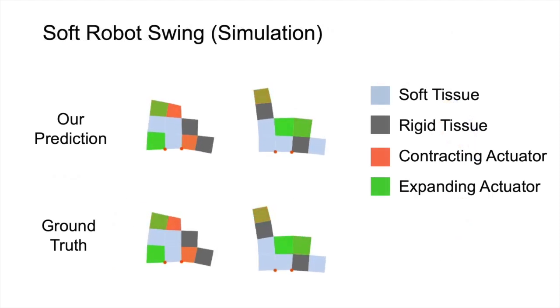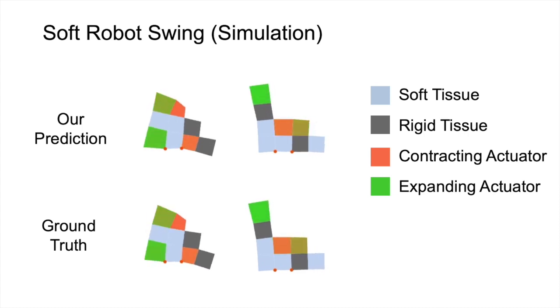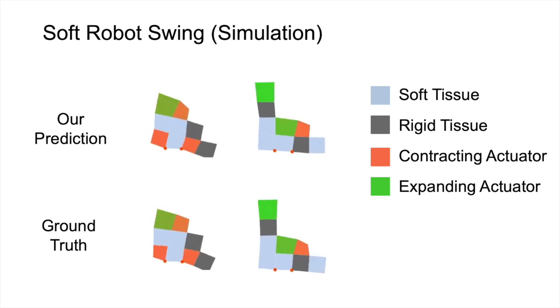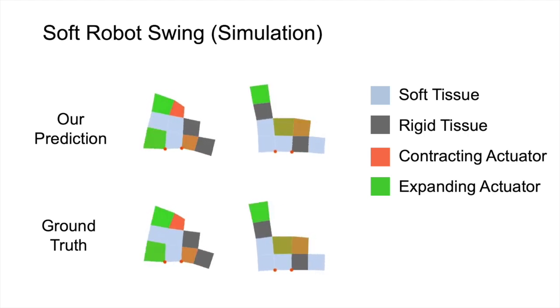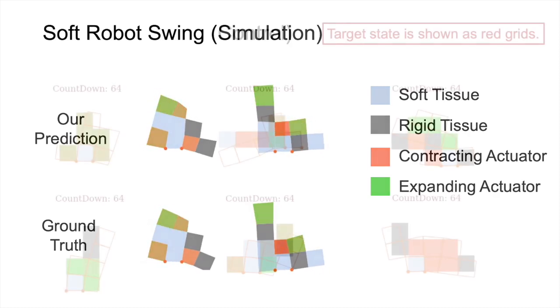In the second task, we consider controlling a soft robot composed of boxes with different materials. Some of the boxes have actuators which can perform contracting or expanding. Here, the first row shows our prediction and the second row shows the ground truth for simulating the soft robots.